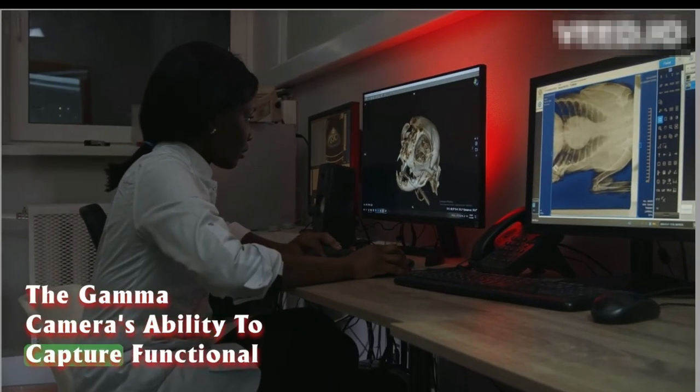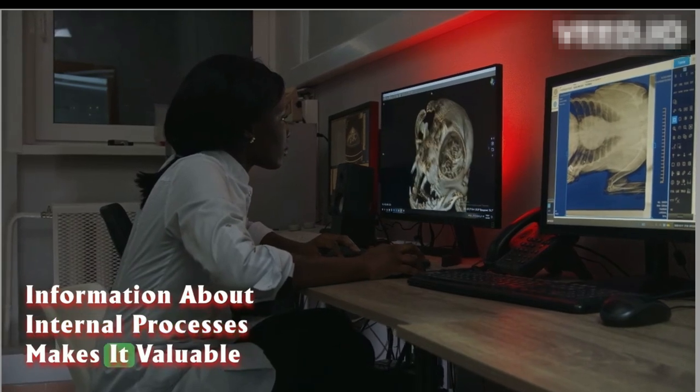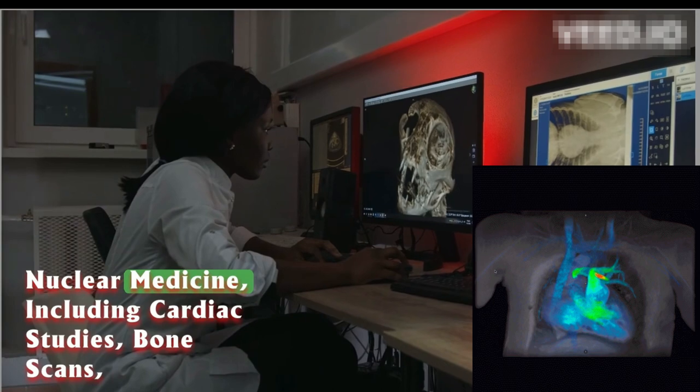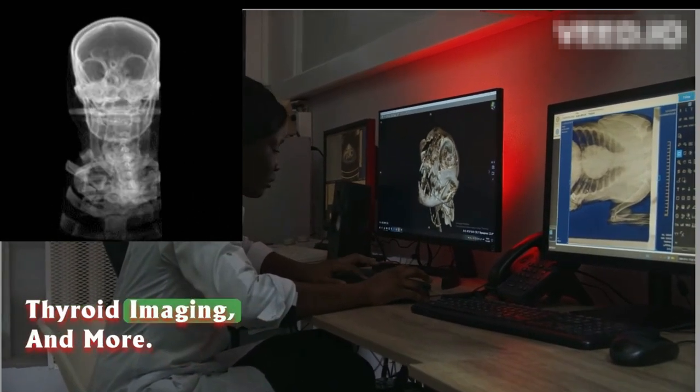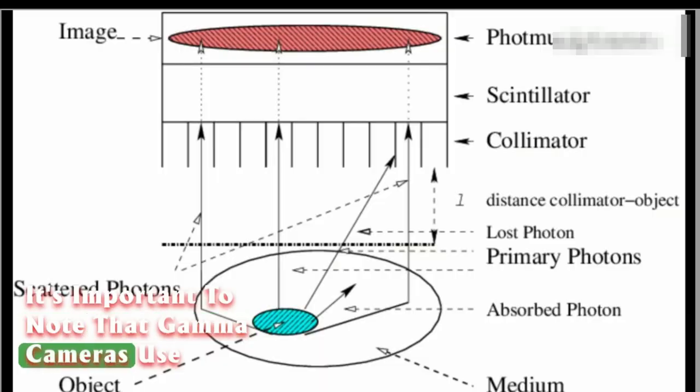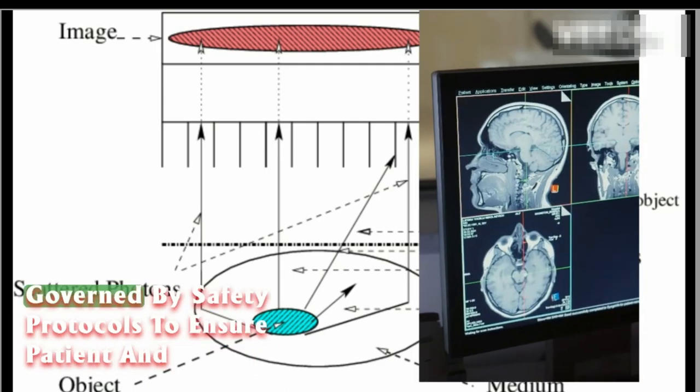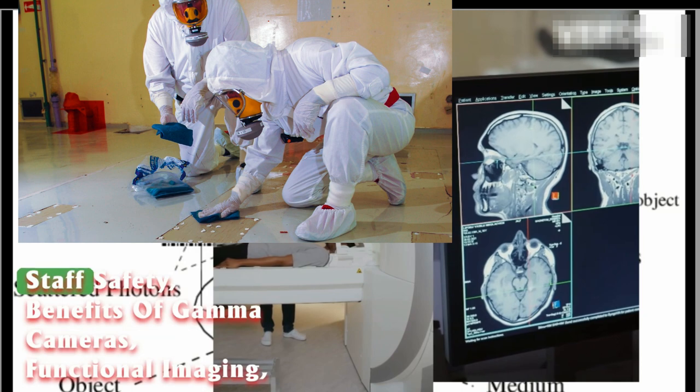The gamma camera's ability to capture functional information about internal processes makes it valuable for a wide range of applications in nuclear medicine, including cardiac studies, bone scans, thyroid imaging, and more. It's important to note that gamma cameras use low doses of radiation and their operation is governed by strict safety protocols to ensure patient and staff safety.